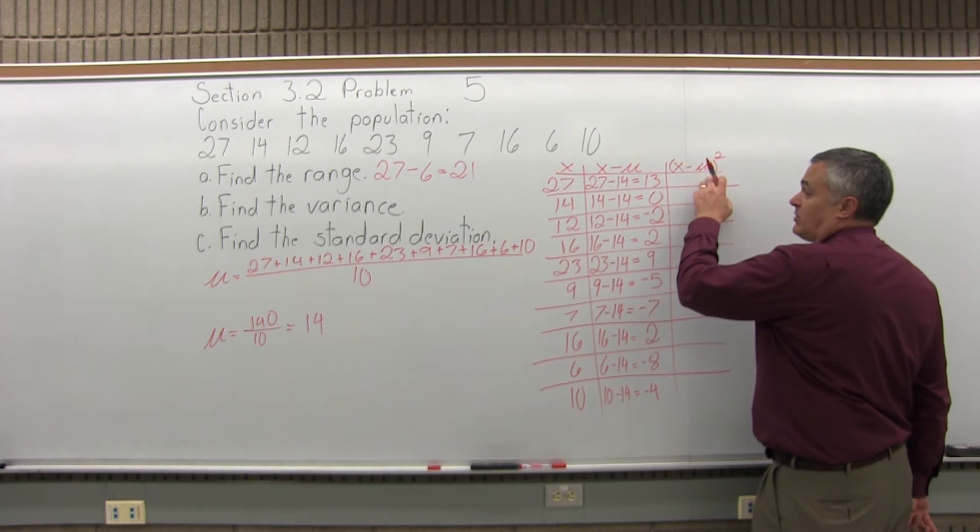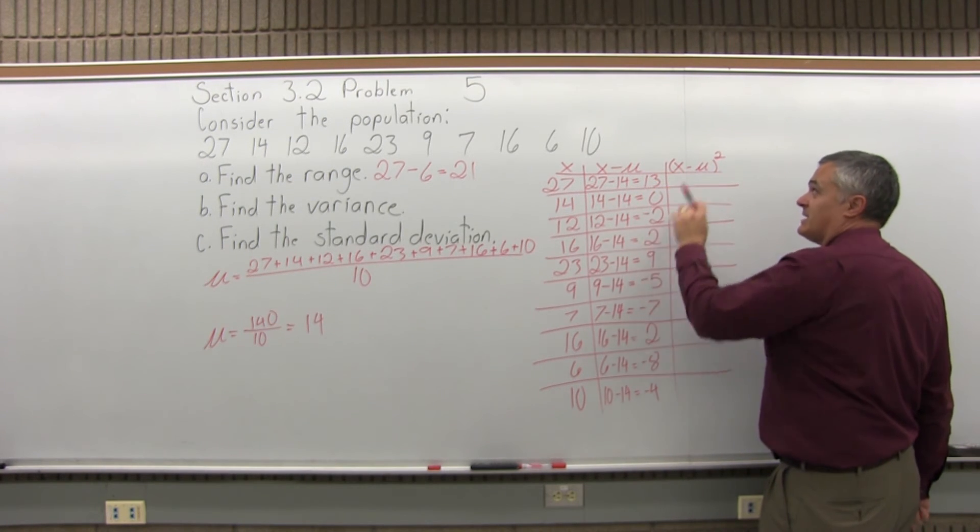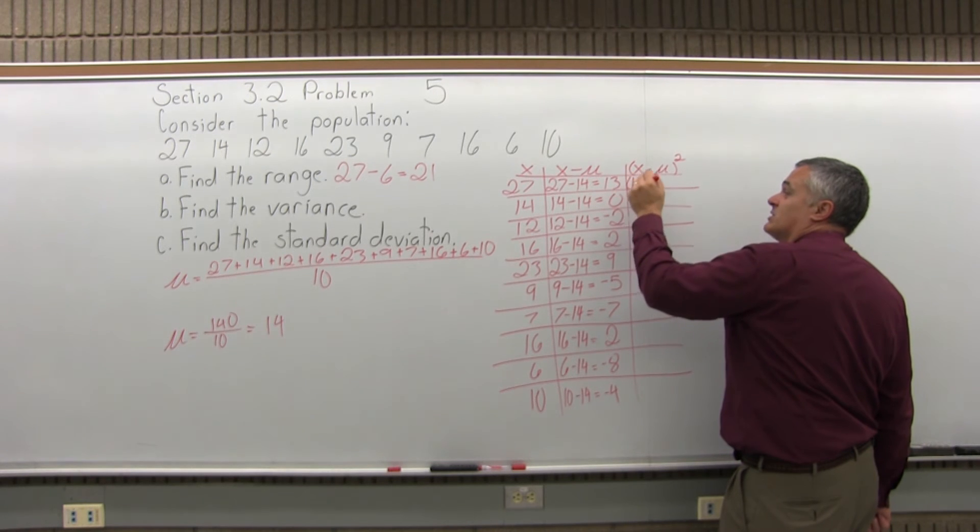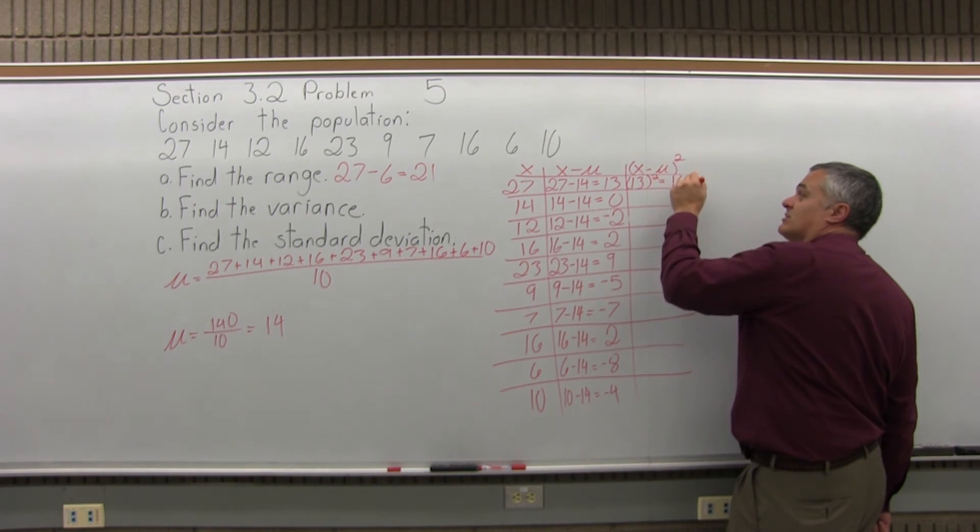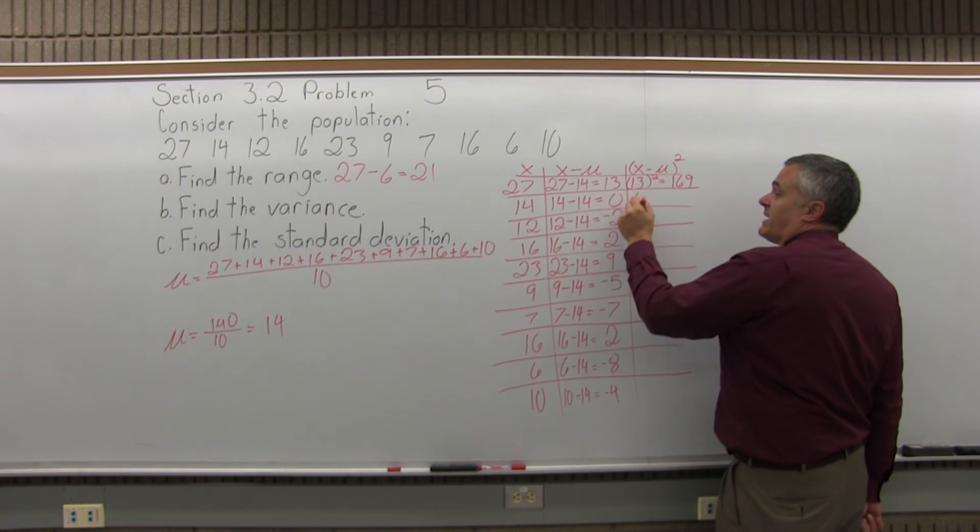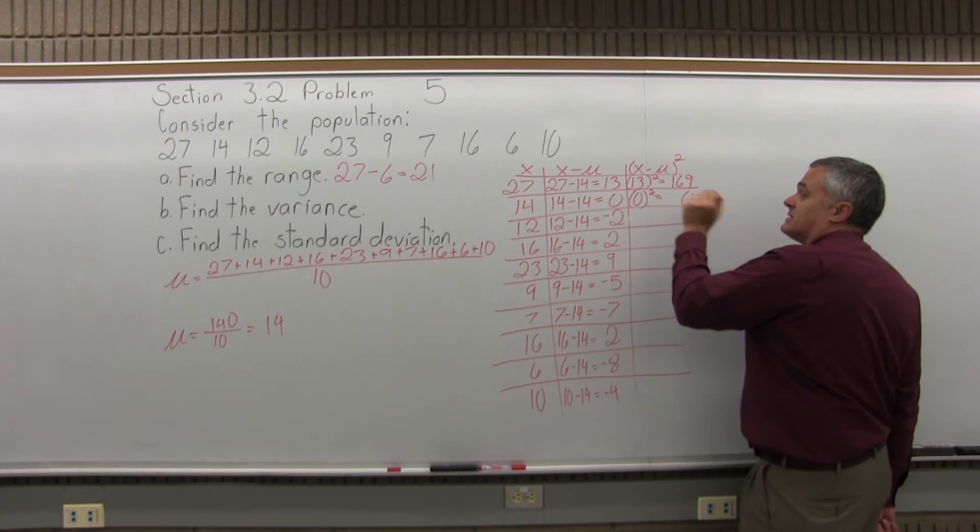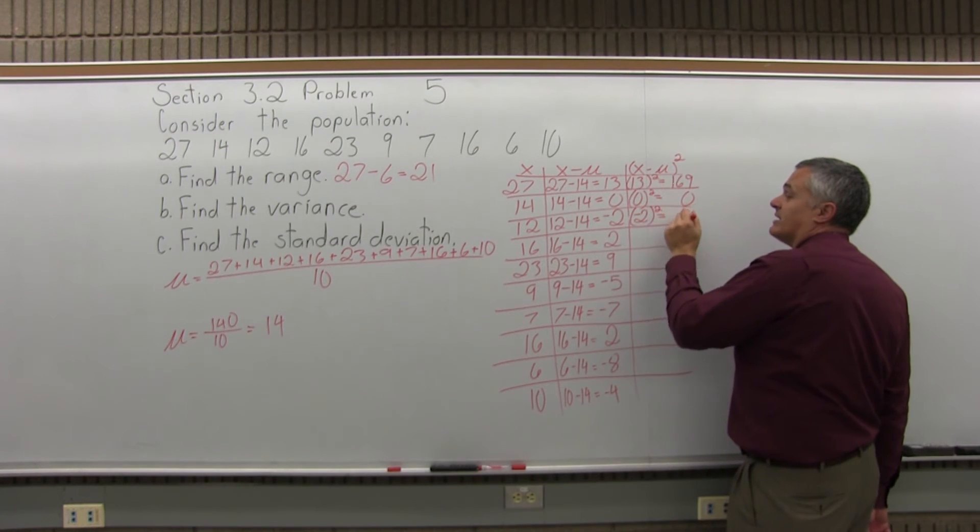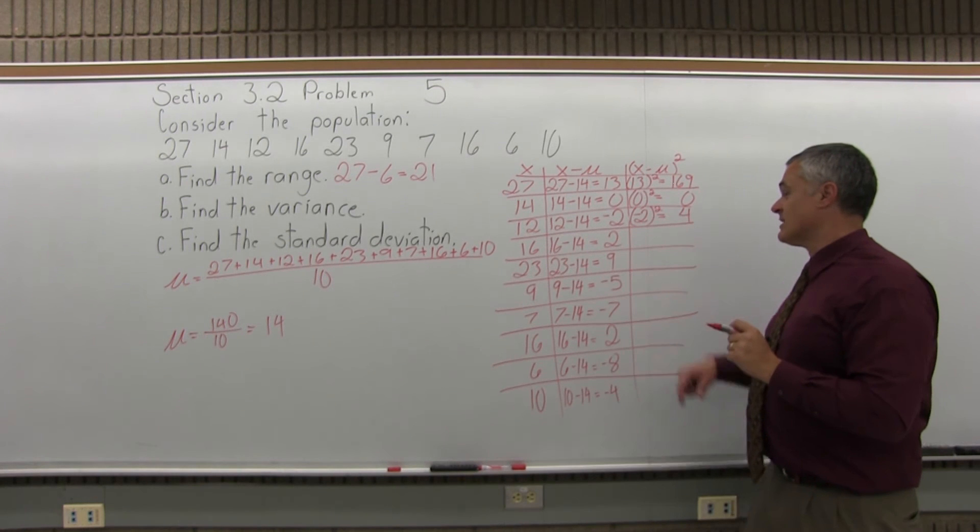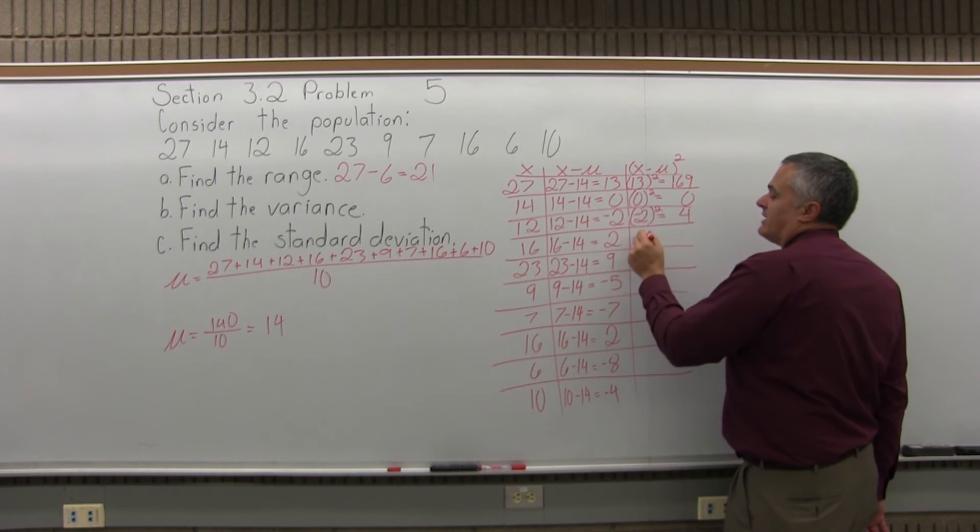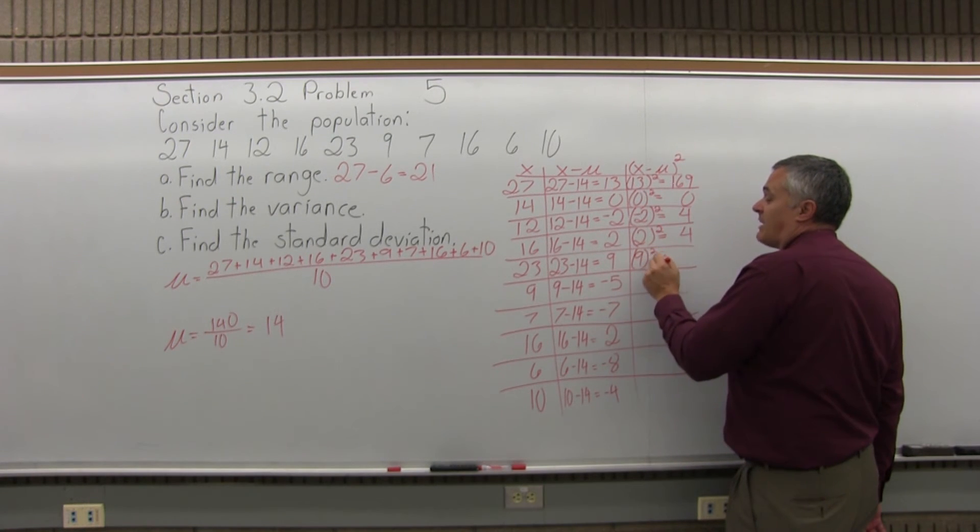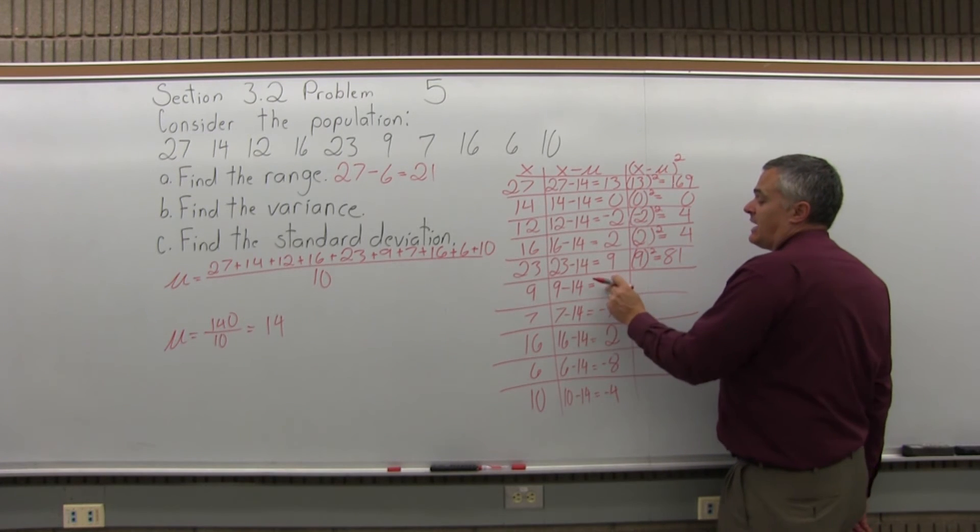So, the last column, we'll take our results for x minus mu and raise it to the second power. In the top row, we had 13, so 13 second power is 169. Next was 0, so 0 second power is 0. Next was negative 2, so negative 2 second power is positive 4. Next was 2, so 2 second power is another 4. Next was 9, so 9 second power is 81. Next was negative 5, so negative 5 second power is positive 25. Next was negative 7, so negative 7 second power is positive 49.